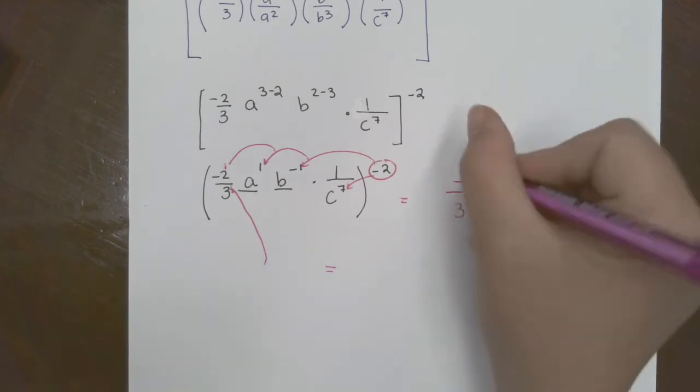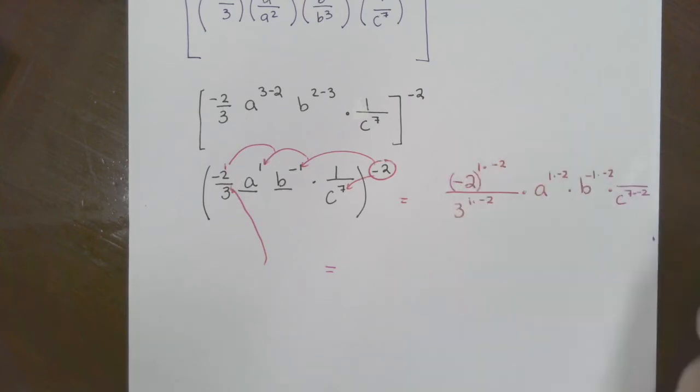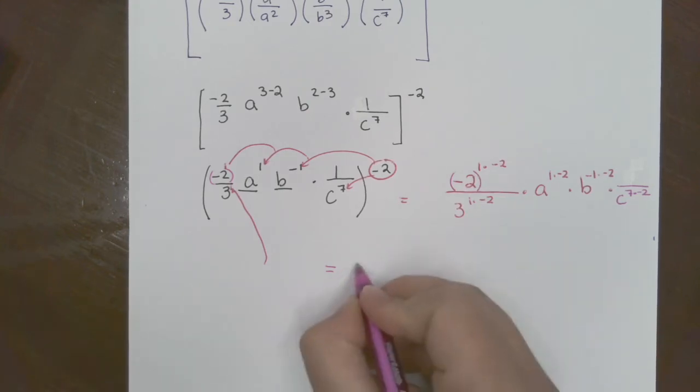All we really have is we have that c to the seven power in the denominator. Bless you. So what we have here is... let me look really quick on the cheater side.